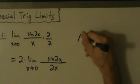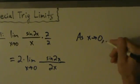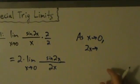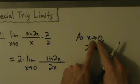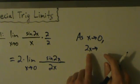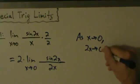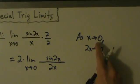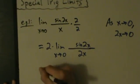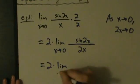As x goes to 0, where is 2x going? Starting with x approaching 0, multiply both sides by 2: 2x approaches 2 times 0, which is still 0. So as x goes to 0, 2x also goes to 0. This means the limit as x approaches 0 is the same as the limit as 2x approaches 0.